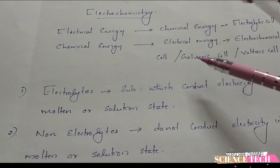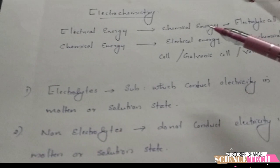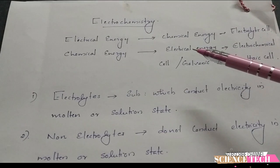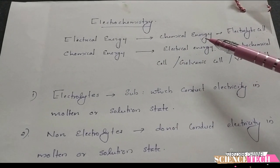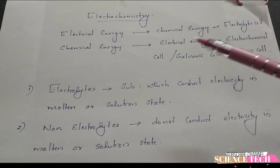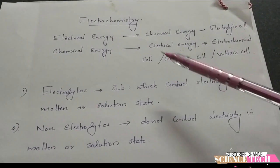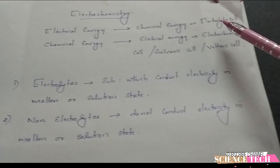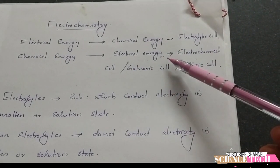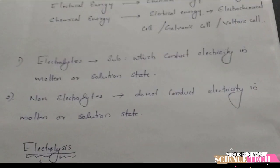Electrochemistry is the branch of chemistry that deals with the conversion of Chemical Energy to Electrical Energy, and Electrical Energy to Chemical Energy. The device used for the conversion of Electrical Energy to Chemical Energy is called an Electrolytic Cell. The device used for the conversion of Chemical Energy to Electrical Energy is called an Electrochemical Cell, or Galvanic Cell, or Voltaic Cell.